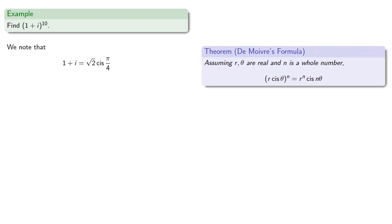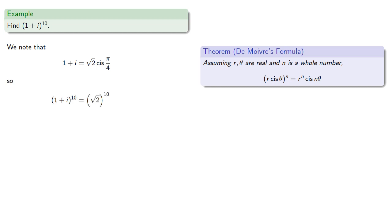So De Moivre's theorem says that the power of 1+i is the modulus to the power 10, and the argument times 10, which is 10 times π/4, and we can simplify the arithmetic to give us 32 cis(5π/2).